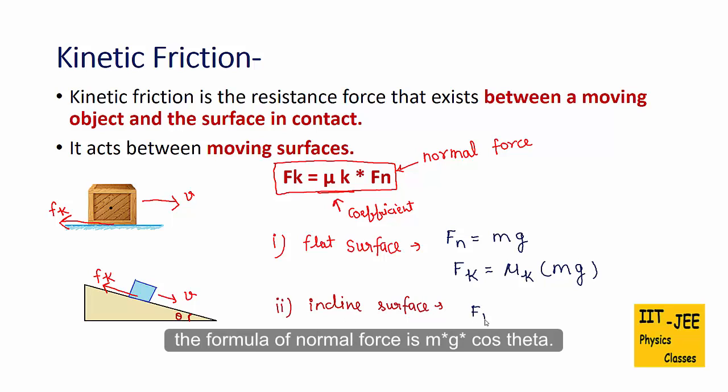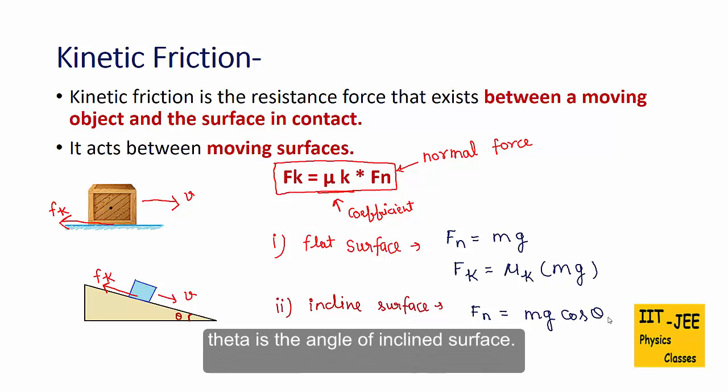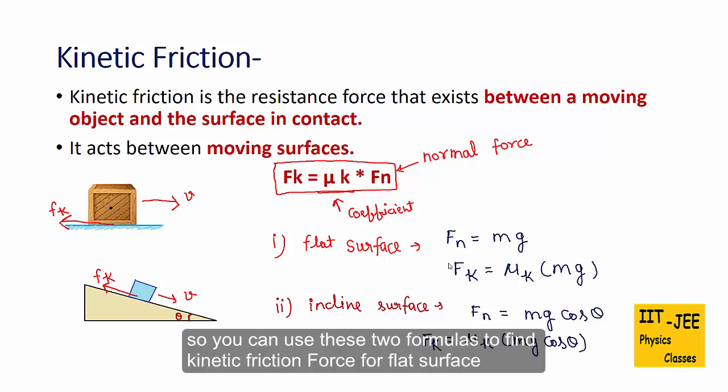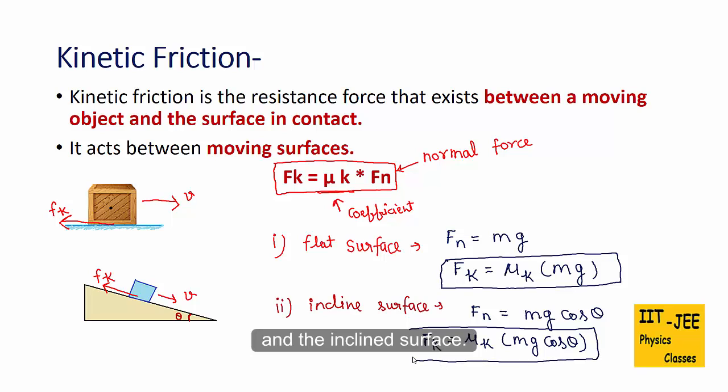The formula of normal force is mg cos theta, where mg is the weight of the box and theta is the angle of inclined. So formula of friction force would be μk times mg cos theta. So you can use these two formulas to find kinetic friction force for flat surface and the inclined surface.